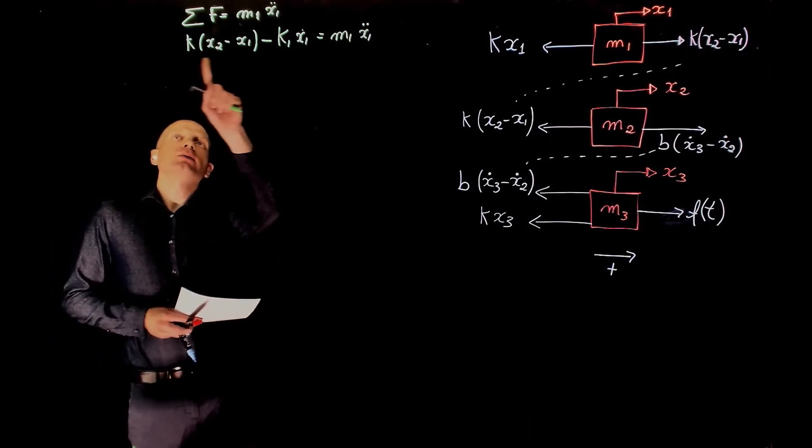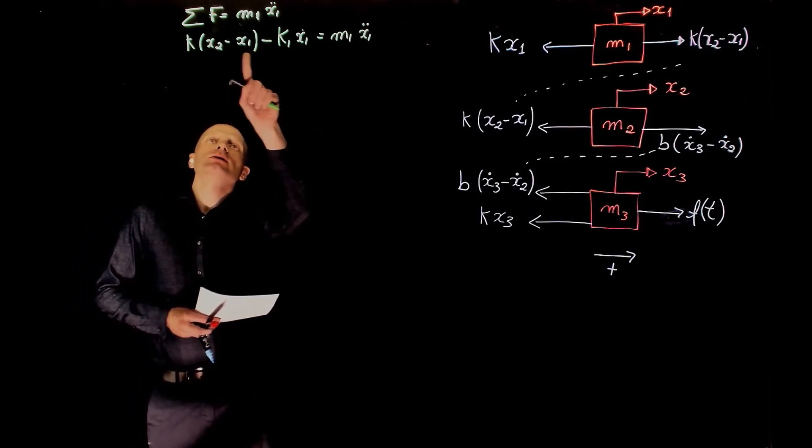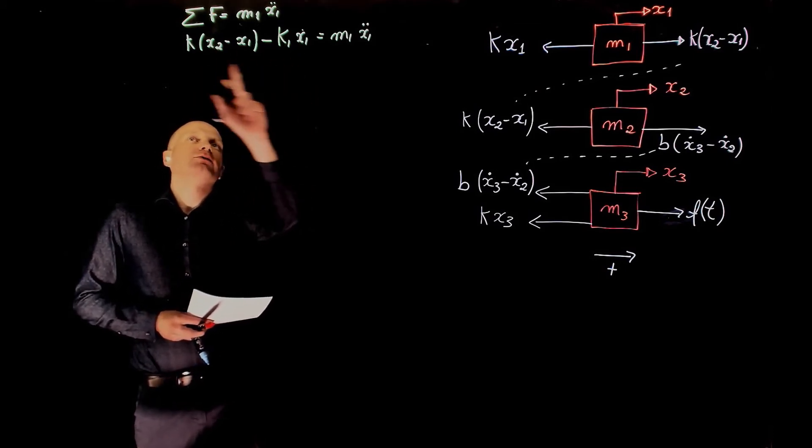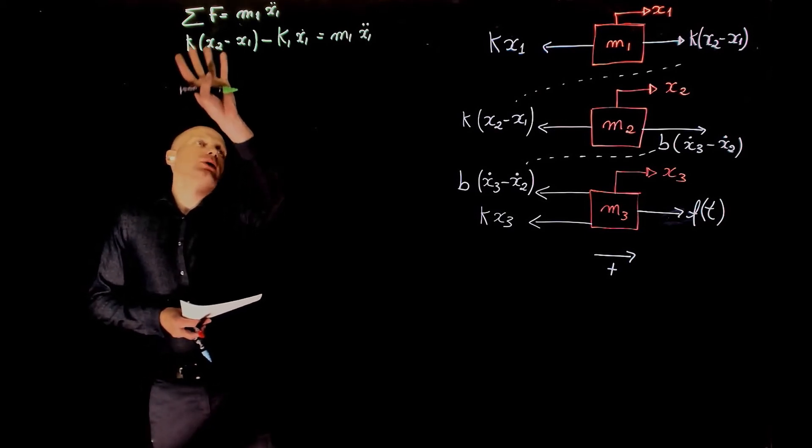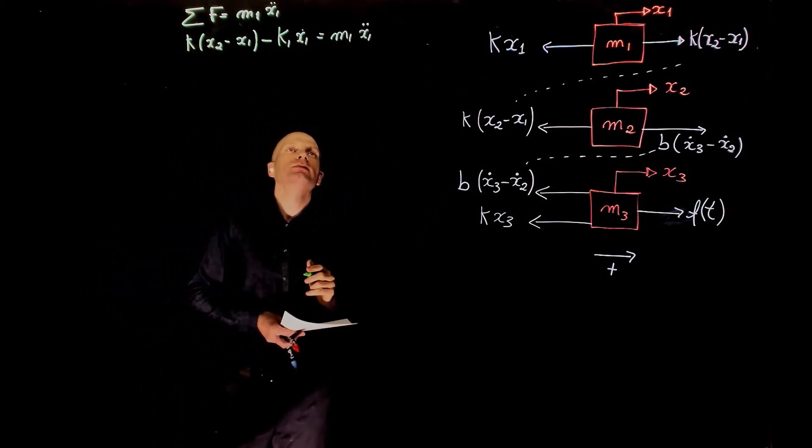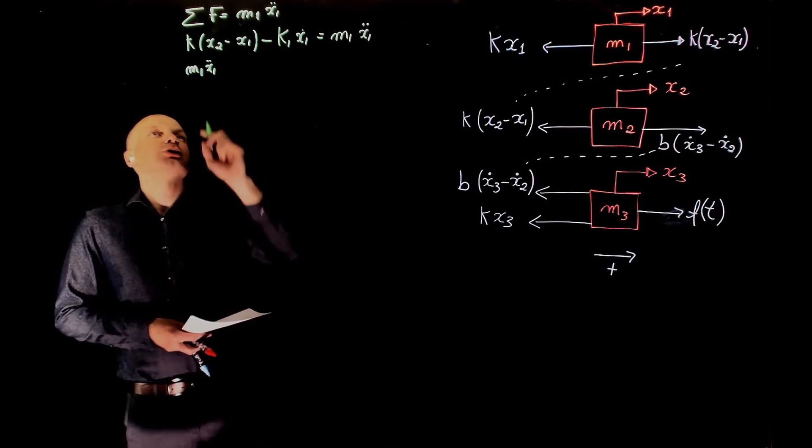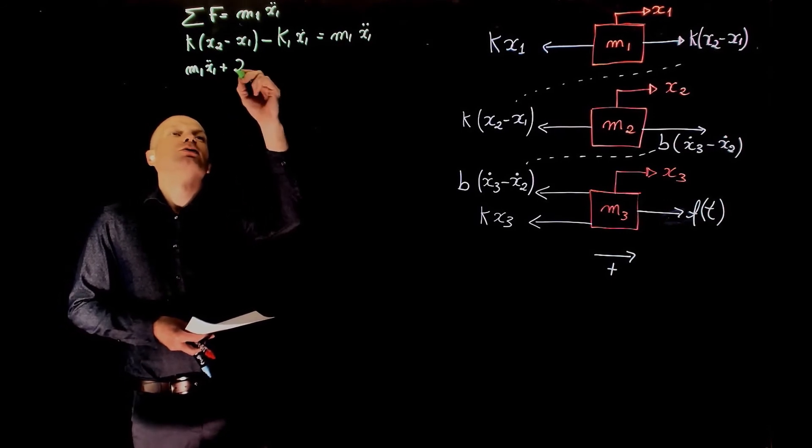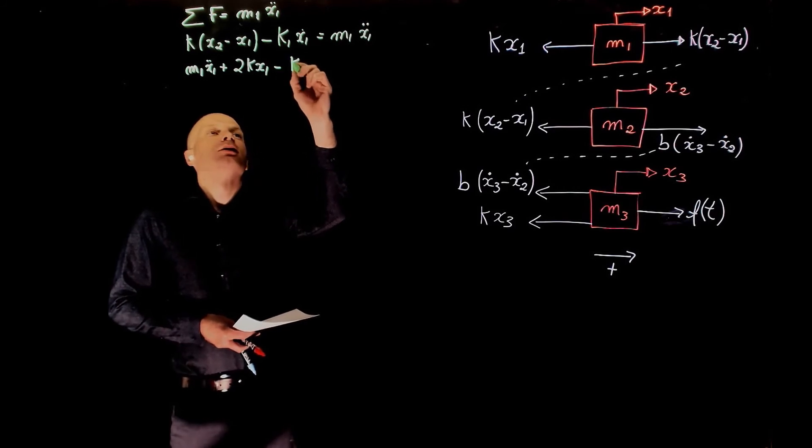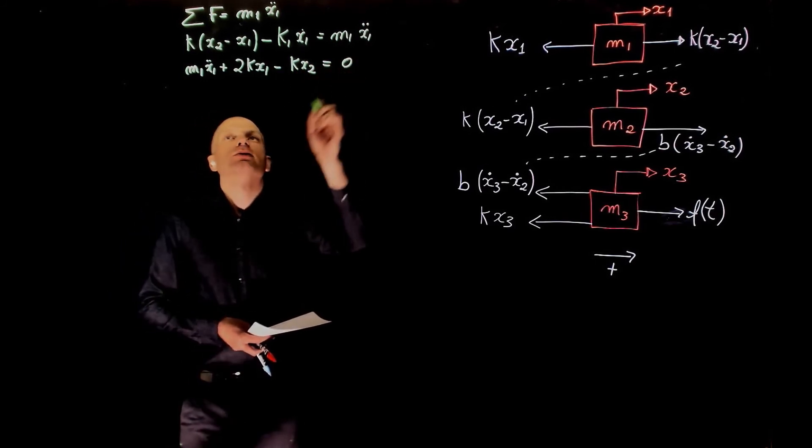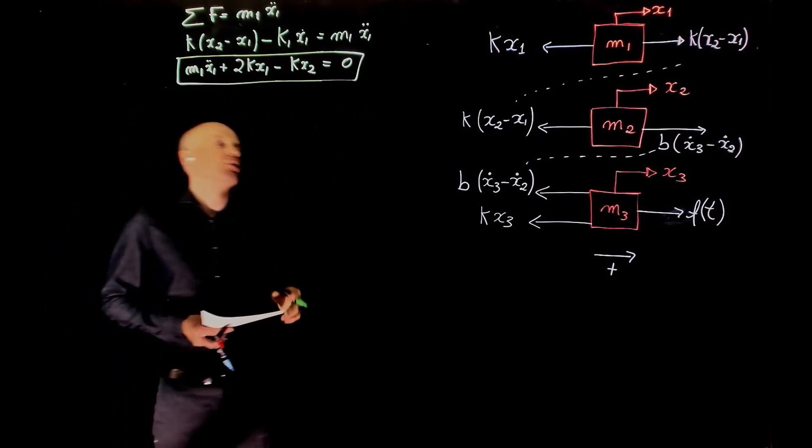If you factor this out, now we have k x2 minus k x1 minus k x1, we have negative 2k x1 plus k x2. And if you move everything to the right, m1 x1 double dot plus 2k x1 minus k x2 equals to zero. So here is the equation for mass 1.